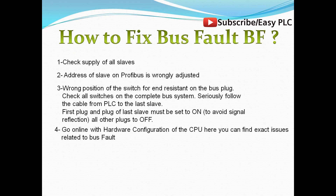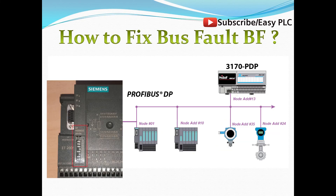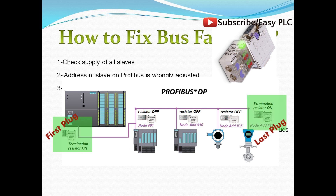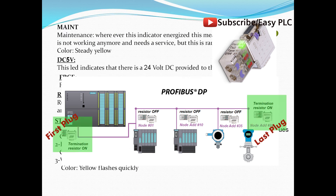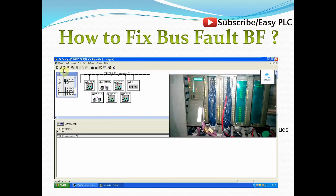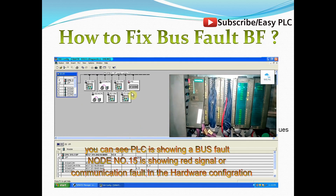How to fix bus fault? Check the supply of all slaves. Verify that the address of each slave on Profibus is correctly adjusted. Check the position of the switch for end resistor on the bus plug. Check all switches on the complete bus system and trace the cable from the PLC to the last slave — the first plug and plug of the last slave must be set on, and all other plugs set to off. Go online with the hardware configuration of the CPU to find exact issues related to the bus fault.